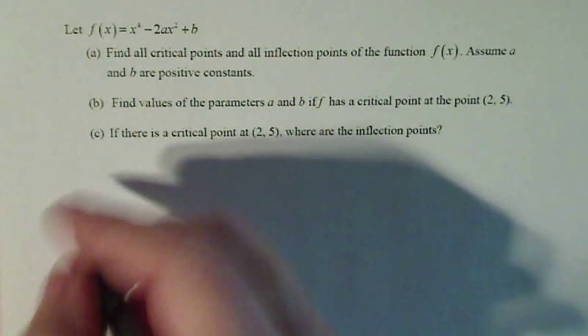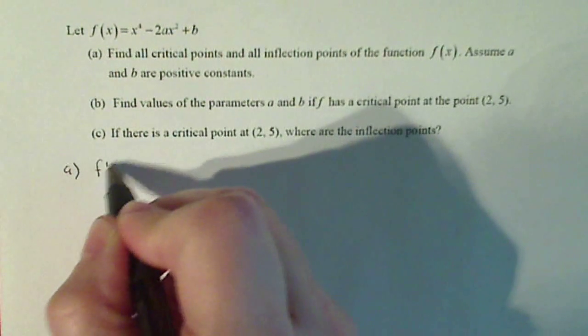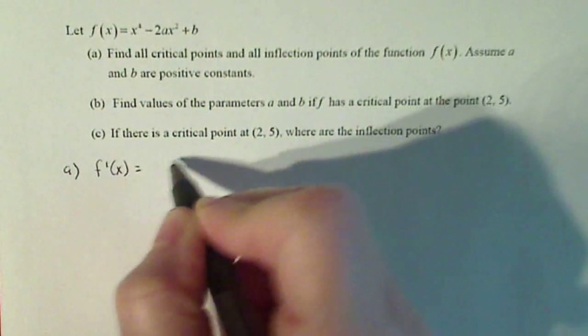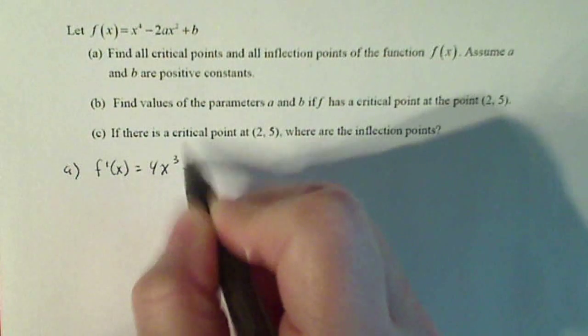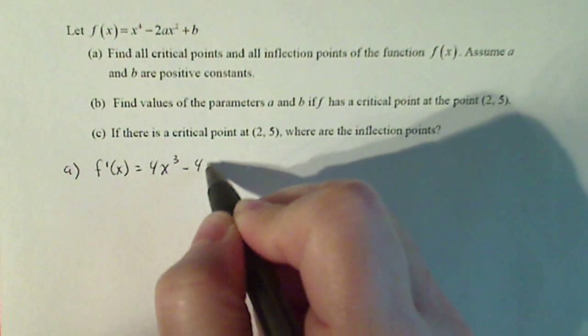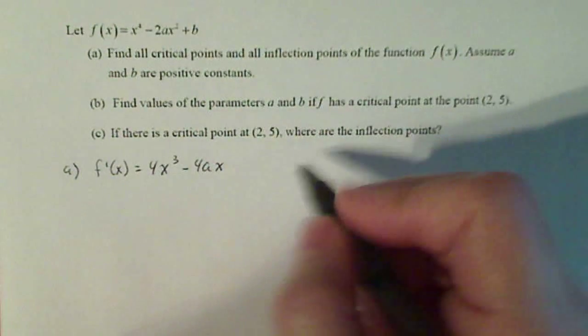All right, so part a, finding all critical points, that means I have to have f prime of x. So f prime of x is going to be 4x to the third minus 4ax. And the derivative of b is zero, so that's our first derivative.